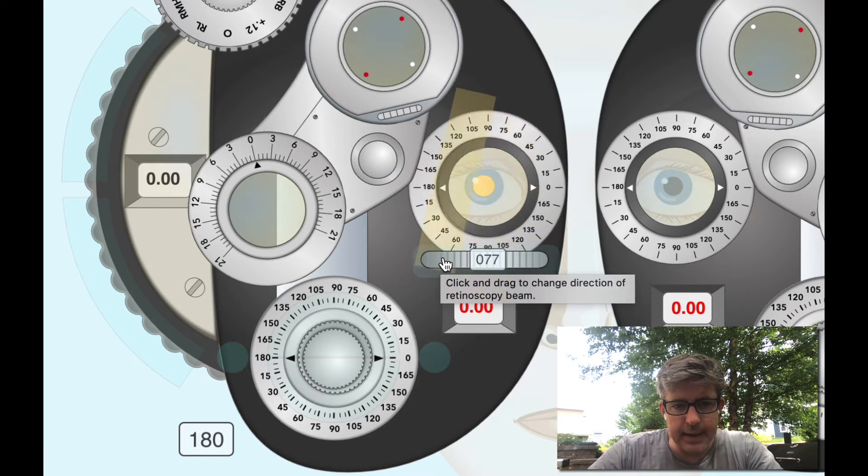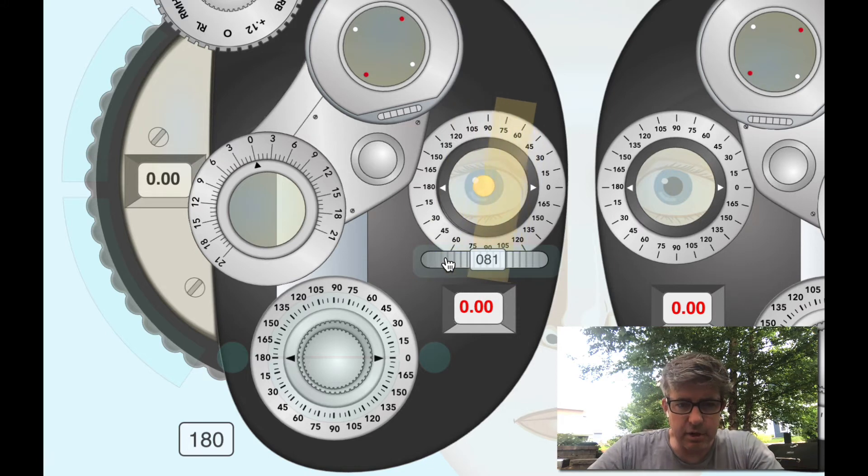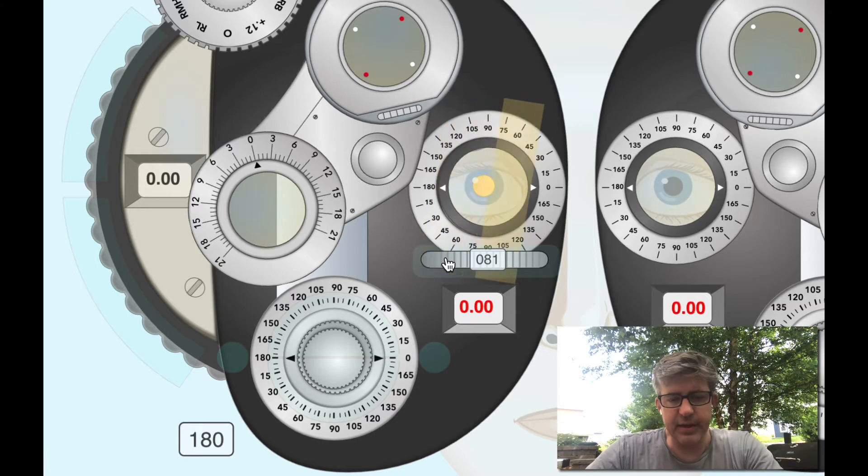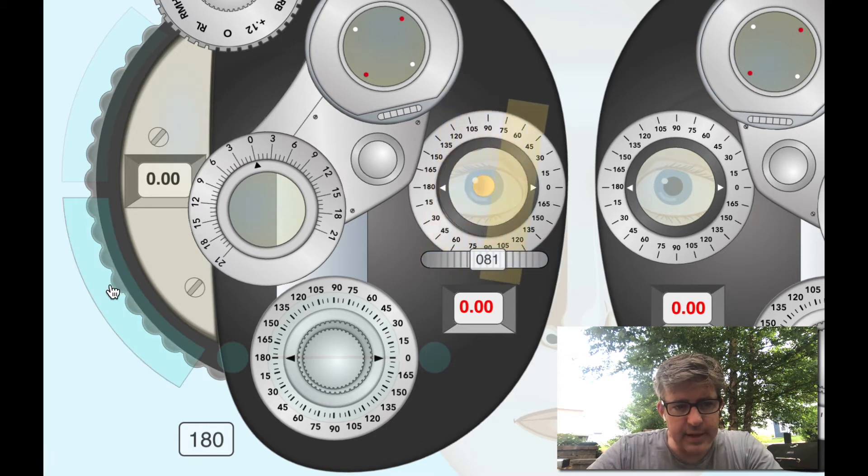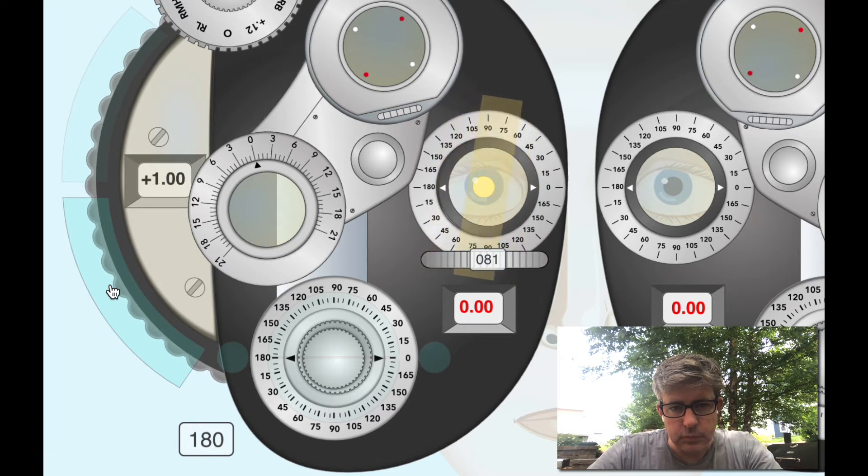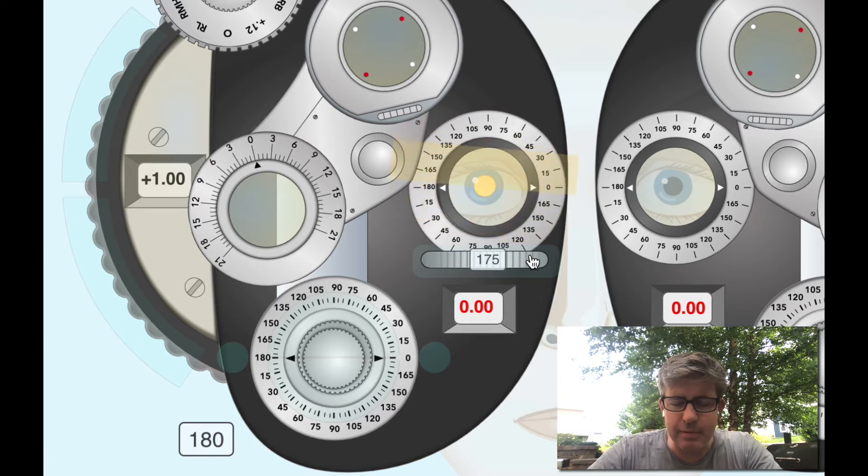With motion here, with motion here. But I'm doing a minus cylinder retinoscopy here on a minus cylinder instrument, so I want to refine and neutralize the more plus or less minus power first. Let's do that. Let's give this some plus until this gets neutral. Ah, that's neutral. Let's go to 90 degrees away.